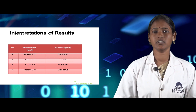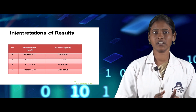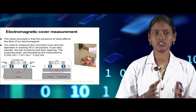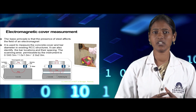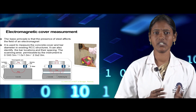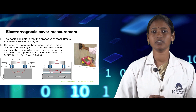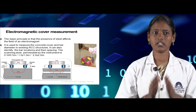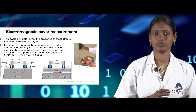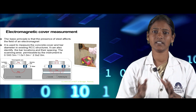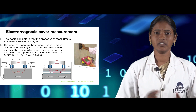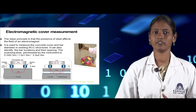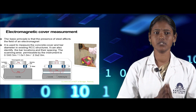The next type of NDT is electromagnetic cover measurement. The basic principle is that the presence of steel affects the field of an electromagnet. It is used to measure the cover concrete and bar diameter of existing RC structures, and can also identify the location of rebars and their spacing. In practice, the scanning direction should be perpendicular to the rebars.